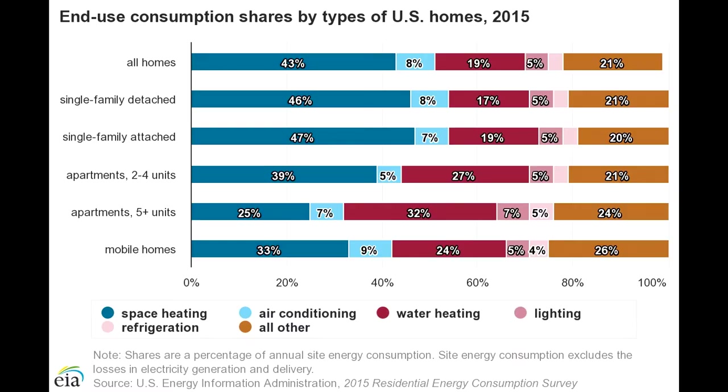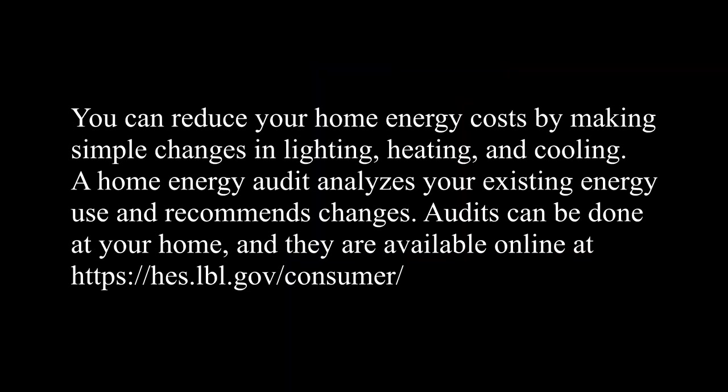What is energy used for in the average U.S. home? 43% of energy consumption was used for heating, 19% water heater, 21% cooking, washing, drying, and electronics, 8% air conditioning, 5% refrigerator, and 3% lights. In the U.S. we have those giant water heaters that run 24 hours a day, while in Europe, water is instead heated on demand. You can reduce your home energy costs by making simple changes in lighting, heating, and cooling. A home energy audit analyzes your existing energy use and recommends changes. Audits can be done at your home and they are available online from Lawrence Berkeley Lab, for example.